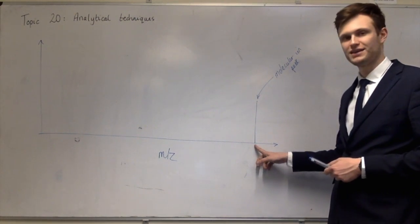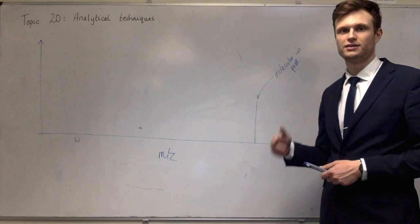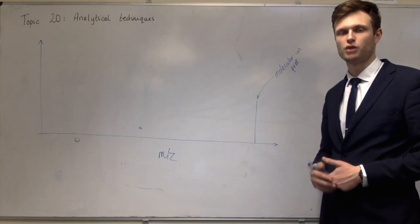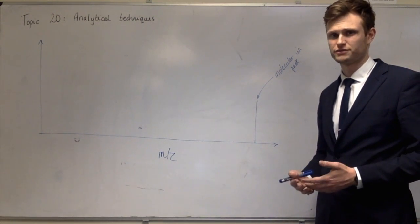Okay, so this peak is called the molecular ion peak, and it's due to the molecule having one electron knocked off. And so, whatever the number here says, that is the molar mass, or the relative molecular mass, of your molecule.